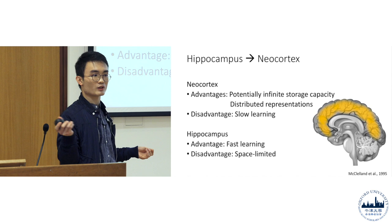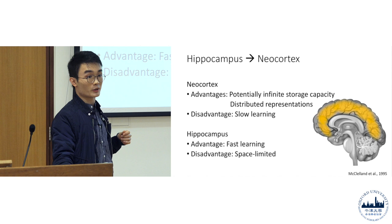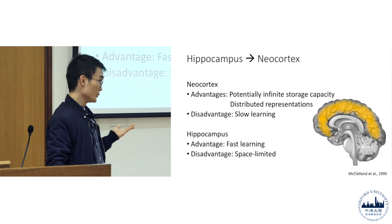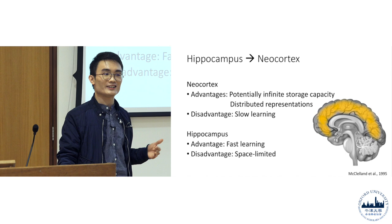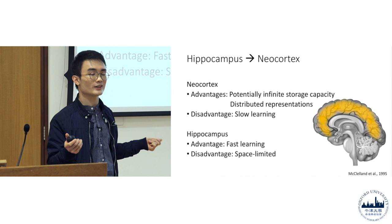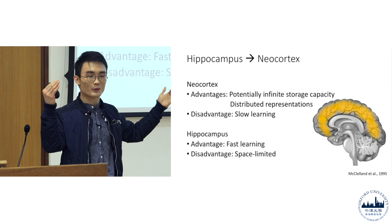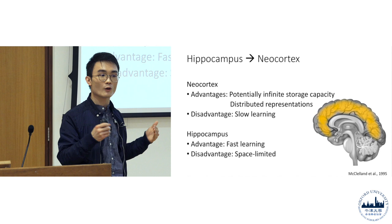Another advantage of the neocortex, which I didn't write in the slide, is that the memories stored there are very stable and very resistant to forgetting. But the disadvantage of the neocortex is that it is a very slow learner — it takes lots of time for the neocortex to learn something new. What neuroscientists refer to as learning is the establishment of new links between neurons. The neurons in the neocortex are relatively inflexible; it takes months or years to form these kinds of connections.